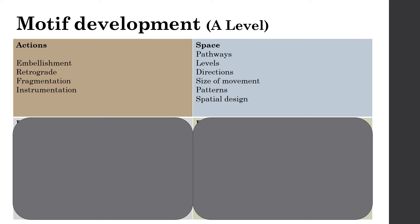Moving on to space — there are lots of ways you can develop space. You could change the pathway, so maybe it was originally a straight pathway and you develop it into a zigzag. Levels, of course — distance from the ground: high, medium, or low. Directions — where you're facing: the side, front, diagonal, or back. Size of movement — the original motif might be small and you develop it into large movement. And patterns or spatial designs — the design created on the floor, or the spatial pattern in relation to all your dancers: where are they in space, what pattern or shape are they creating?